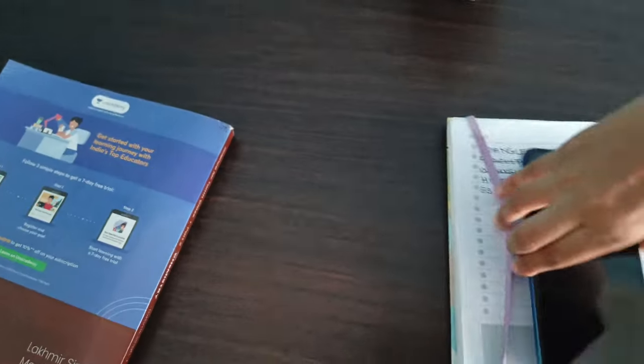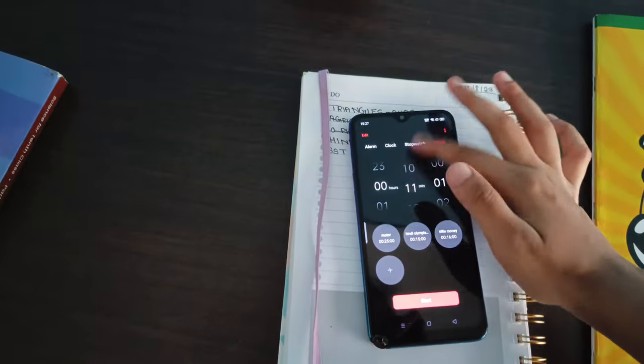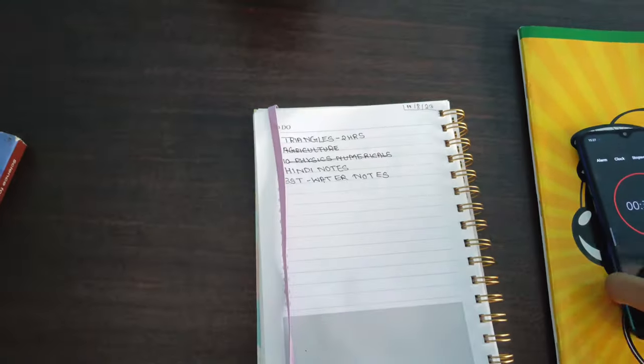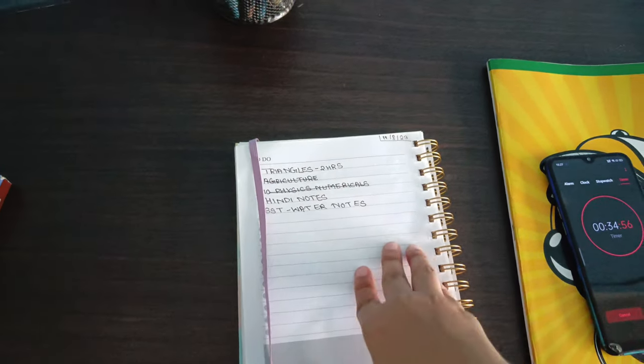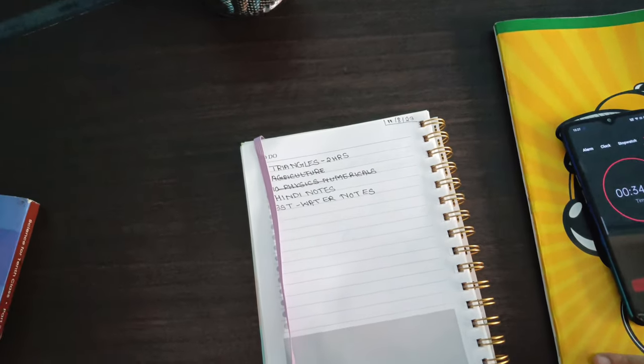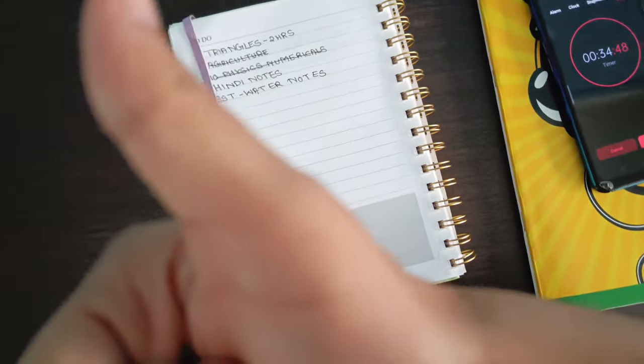Right now I'm going downstairs so I will take a 35 minutes break. I'm done with two hours of studying so I still have four more hours left. After coming back I'll do triangles and after that we'll start writing the notes.